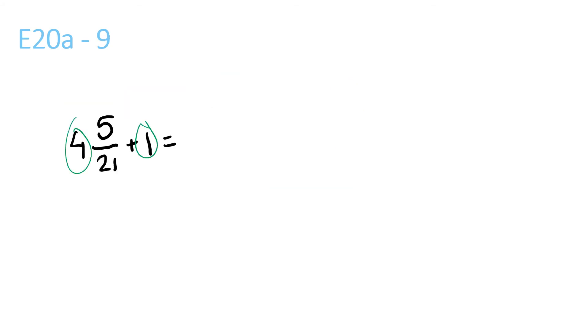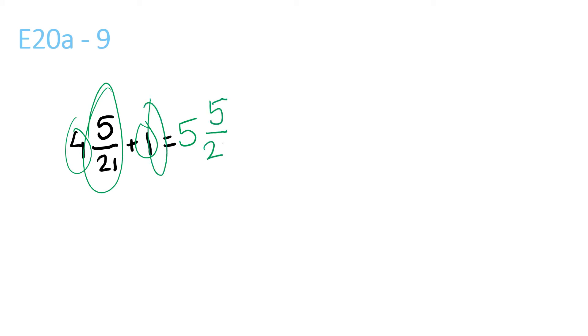4 plus 1 is 5. And 5 over 21 plus nothing is equal to 5 and 5 over 21.